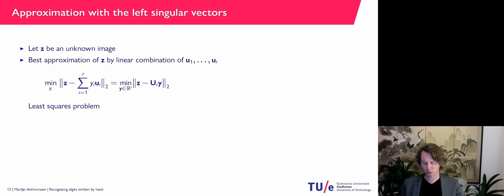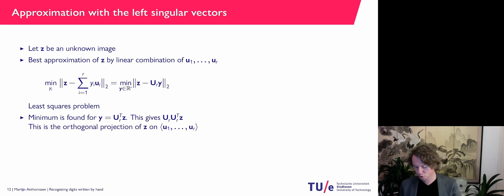They form an orthonormal system. They have length 1. If you take two different ones, they're perpendicular. It's a least squares problem. And we can solve it. We can solve it. And the solution is U_r transpose Z.